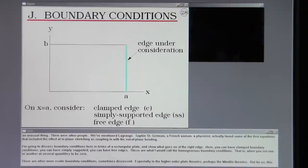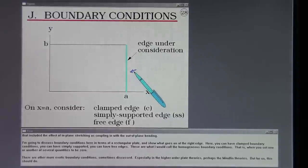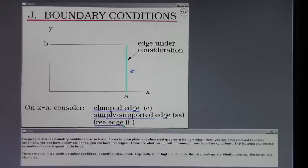I'm going to discuss boundary conditions here in terms of a rectangular plate and show what goes on at the right edge. Here you can have clamped boundary conditions, you can have simply supported, and you can have free edges. These are what I would call the homogeneous boundary conditions, that is, when you set one or another of several quantities to be zero. There are other more exotic boundary conditions sometimes discussed, especially in the higher order plate theories, perhaps the Mindlin theories. But for us, this should do.